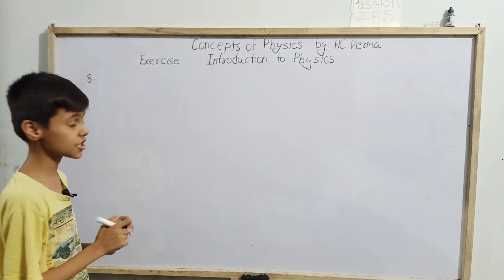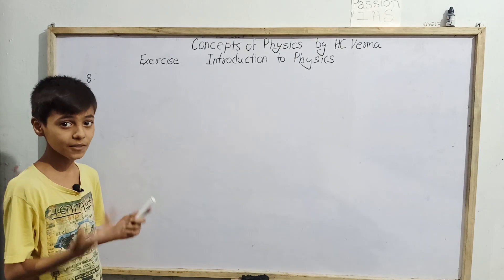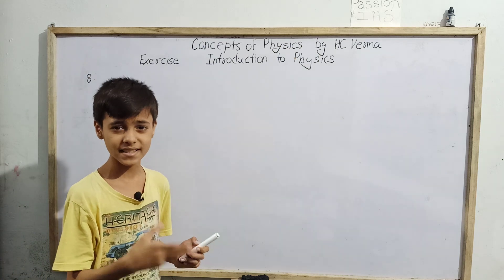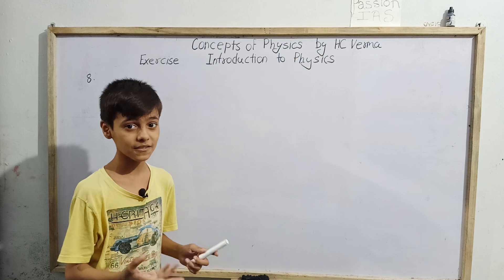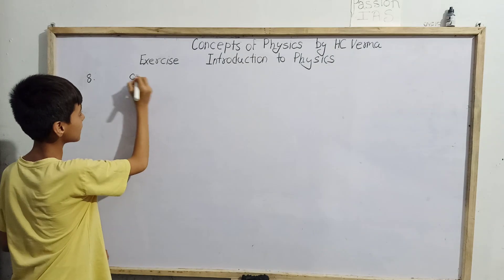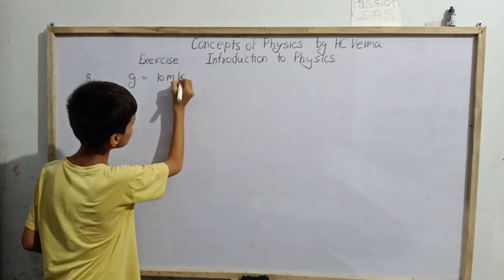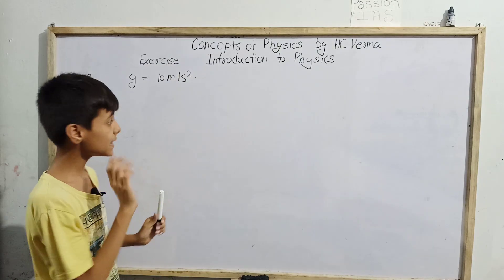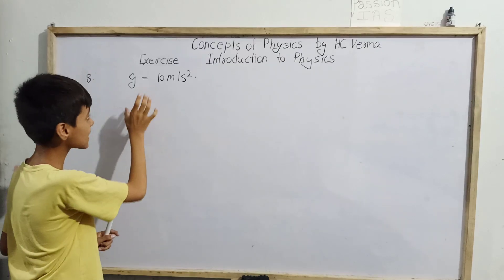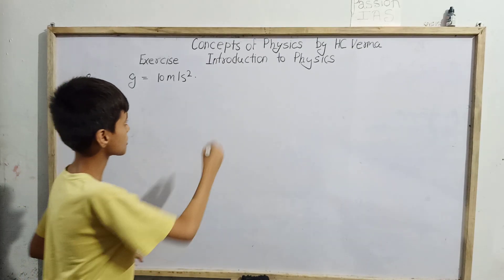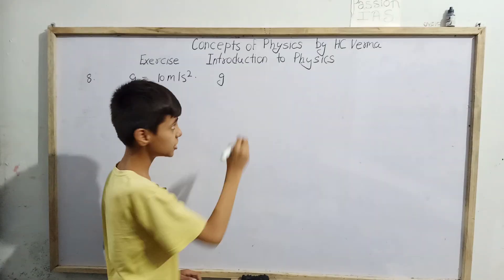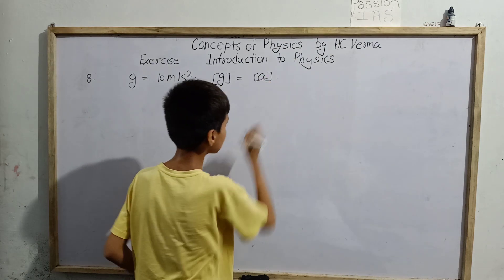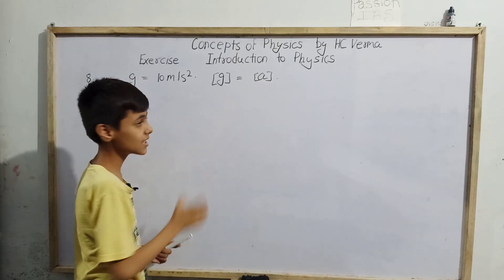So here this is our question. The acceleration due to gravity, denoted by G, has a general numerical value of 9.8 meters per second square, but sometimes we take it as 10 meters per second square. G is a kind of acceleration — it is acceleration due to gravity, so it is also an acceleration. Whatever dimensions G has are the same as A, because A is also acceleration and G is also acceleration.